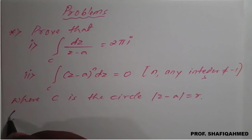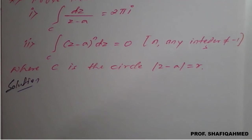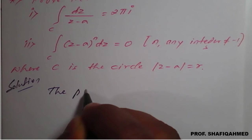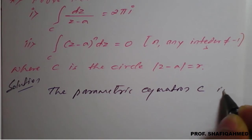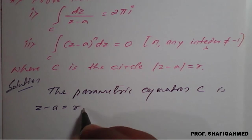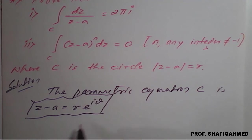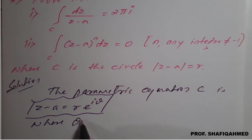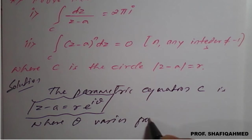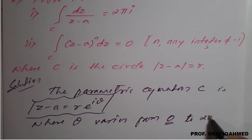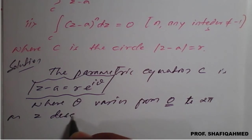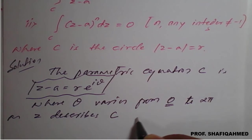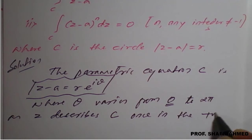The parametric equation of c is z minus a equals r times e raised to iθ. This is very important to remember. Here θ varies from 0 to 2π, because the circle means it varies from 0 to 2π as z describes c once in the positive sense.